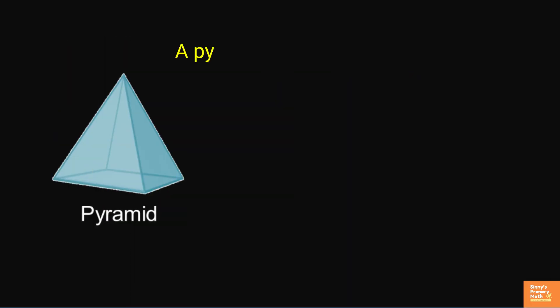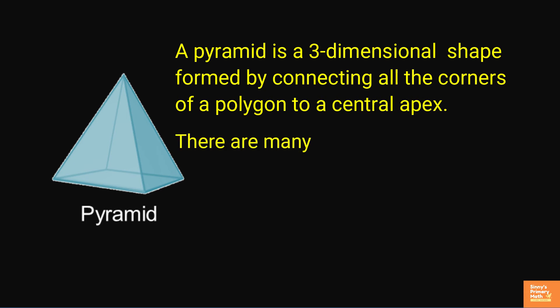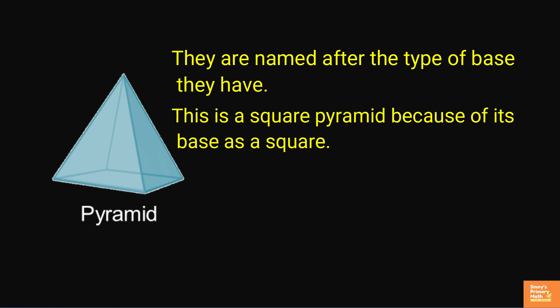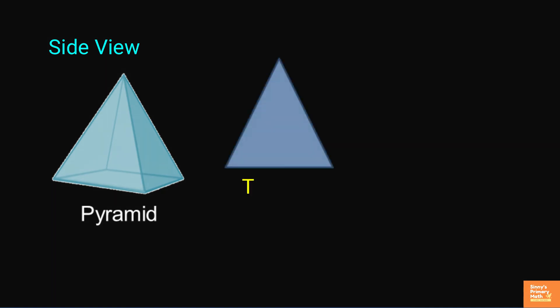Pyramid. A pyramid is a three-dimensional shape formed by connecting all the coordinates of a polygon to a central apex. There are many types of pyramids. Most often, they are named after the type of base they have. This is a square pyramid because its base is a square. Side view of this pyramid looks like a triangular shape for left and right side. Bottom of the pyramid has a square shape.